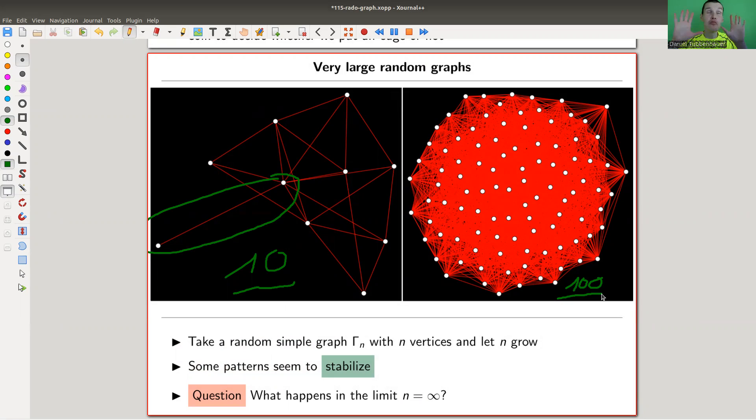For example, the 100 vertex graph, if you're really unlucky, then it could be not connected. But this is just essentially impossible. Because for every vertex, you flip 99 coins. And to make it disconnected, you would need to flip 99 times heads, for example. And this is just not going to happen. So 10 vertex graph, it's kind of more likely. And somehow there's some different other properties you could study, and they kind of seem to stabilize as n grows, which is somehow a law of large numbers for those graphs.